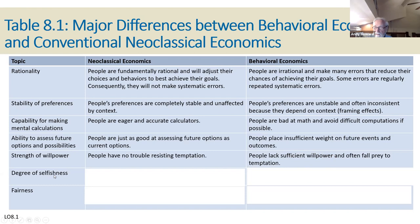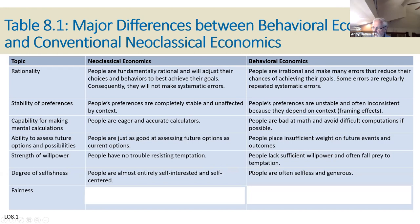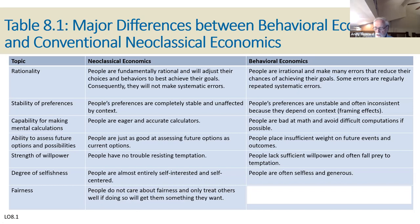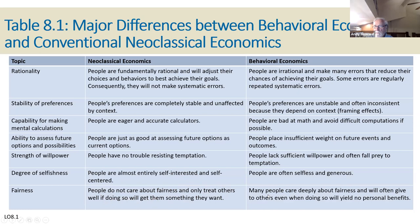Behavioralists say people lack sufficient willpower and often fall prey to temptation. Degree of selfishness: according to traditional economics, people are almost entirely self-interested and self-centered. Behavioralists say people are often selfless and generous. In terms of fairness, traditional economics said people don't care about fairness and only treat others well if it'll get them something they want. Behavioralists say many people deeply care about fairness and will often give to others even when it doesn't bring them personal benefits.